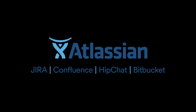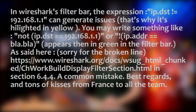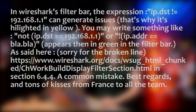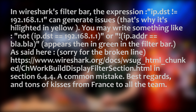We are back with more feedback from you. Phillip writes: in Wireshark's filter bar, the expression IP.dst != (IP address) can generate issues — that's why it's highlighted in yellow. You may want to write something like NOT IP.dst == (IP address) in parentheses, or !(IP.address == IP address) in parentheses, which will then appear green in the filter bar. He links to section 6.4.4, describing it as a common mistake. Best regards and tons of kisses from France to all the team. Thank you so much, Phillip. I'm going to get on my computer and show you exactly how that works.